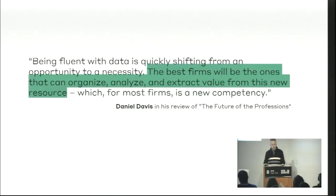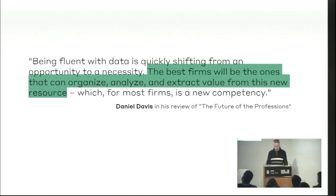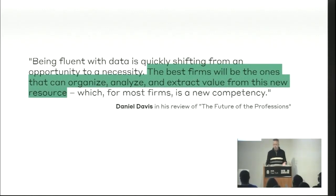Where do we go now? I would argue it starts with data fluency. Daniel Davis's review of 'The Future of the Professions' notes that being fluent with data is quickly shifting from an opportunity to a necessity. The best firms will be the ones that can organize, analyze, and extract value from this new resource — which for most firms is a new competency. This is how we make better designers through augmentation: provide them with better data at the right moment in order to improve the learning feedback loop. Take your gut feeling as an important data point, but take it with a conscious understanding of your mental biases and use other data and integrated technologies to provide rapid feedback for learning.